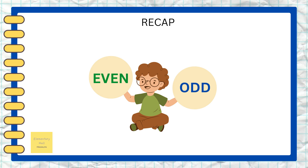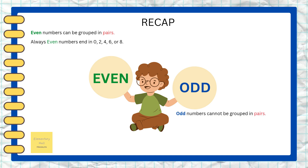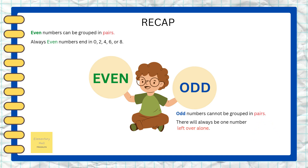So let's recap what we learned today. We learned about even numbers and odd numbers. Even numbers can be grouped in pairs, and even numbers always end in 0, 2, 4, 6, or 8. Odd numbers cannot be grouped in pairs — there will always be one number left alone. And always remember: odd numbers end in 1, 3, 5, 7, and 9.